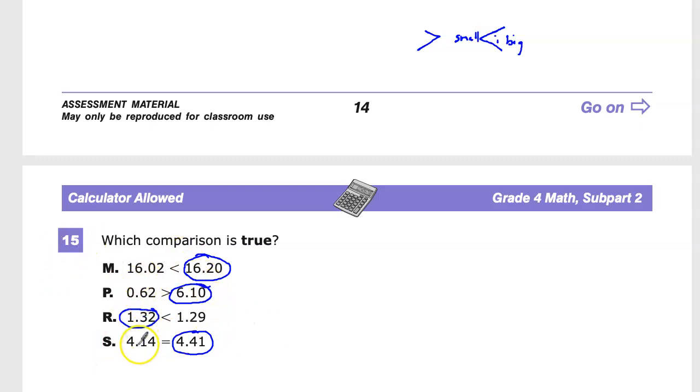Let's start here at the bottom. Answer S says that these two values are equal. We know that one is greater, so that's obviously not true. For R, we've identified 1.32 as the bigger number. But the story being told here is that 1.29 is on the big end of the inequality. So it says 1.32 is smaller than 1.29. It also says 1.29 is bigger than 1.32, but we tested that earlier and know that's not true. So that's out.